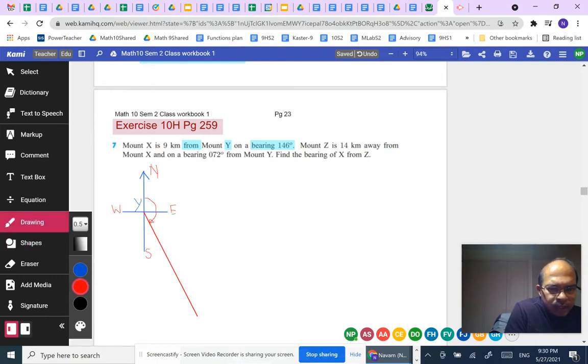Let's assume that this is nine kilometers. Therefore, the point down here is X.